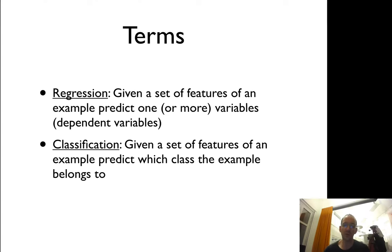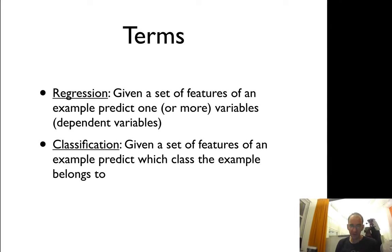There are a few terms that are very important in machine learning that we should go through before discussing more details. One is the difference between regression and classification. In regression, you want to predict one or more dependent variables. These can be continuous numbers typically. For example, you want to predict the surface area of a residue: is it one angstrom, 10 angstroms, or 100 angstroms?